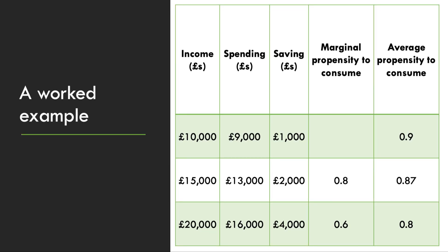Let's show this using a bit of data with three levels of income. At £10,000, the average propensity to consume is 0.9. That next £5,000 of income — from £10,000 to £15,000 — increases spending by £4,000. The marginal propensity to consume is 0.8, which is lower than the previous average, so it drags the average down to 0.87. And for the next £5,000 of extra income, people are spending 60% of that change — the MPC is 0.6 — which brings the average down further to 0.8. If the marginal is less than the average, the average goes down.